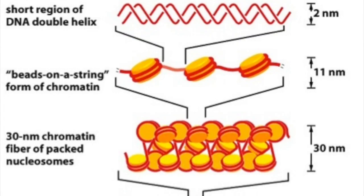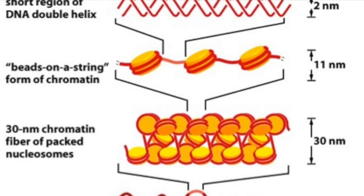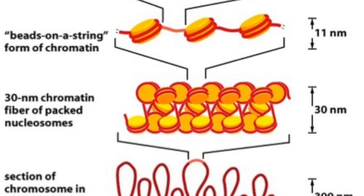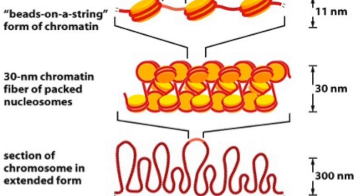The nuclear pore complex is used for transportation of large molecules in and out of the nucleus. DNA is finely packed with histone proteins and further condensed to form chromatin fibers.